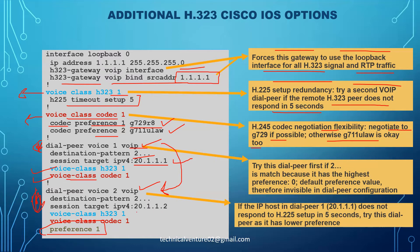For redundancy, a second dial peer points to a secondary CUCM at 20.1.1.2. If the primary CUCM doesn't respond, after five seconds the gateway tries this second dial peer. A third dial peer with preference 2 is also available. The dial peer with no explicit preference (default/zero) is tried first, then preference 1, then preference 2 - providing full failover across multiple CUCM subscribers.